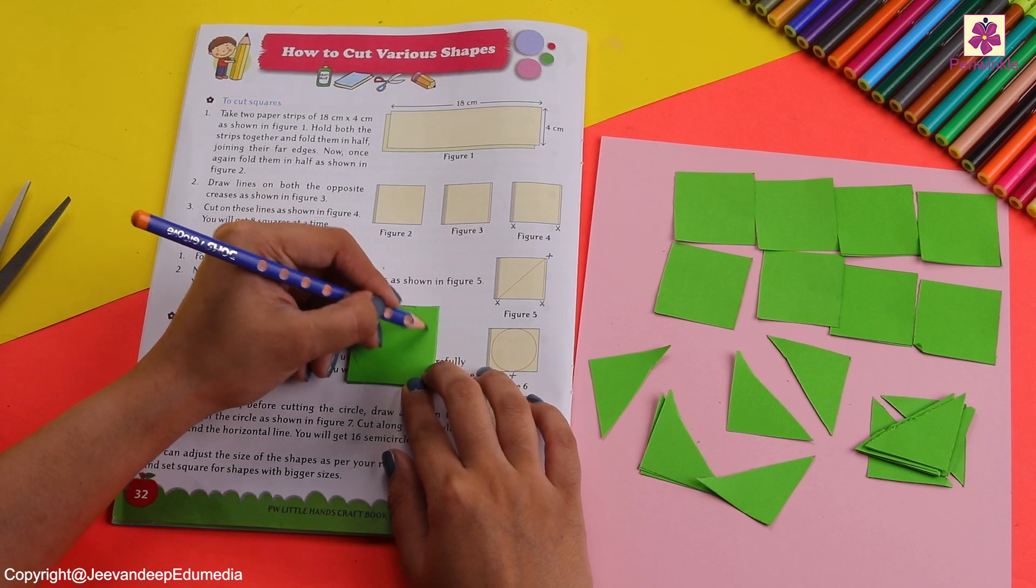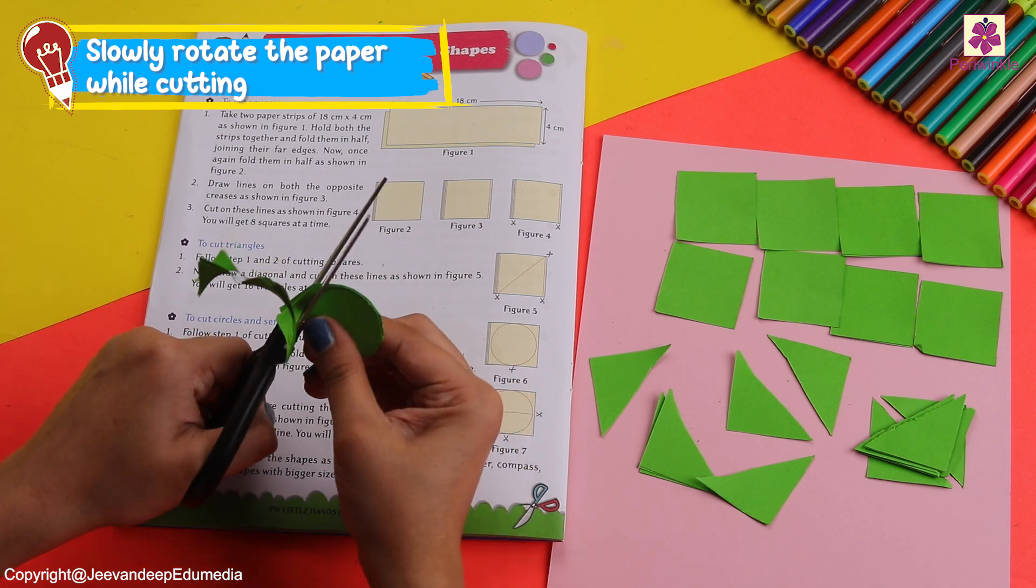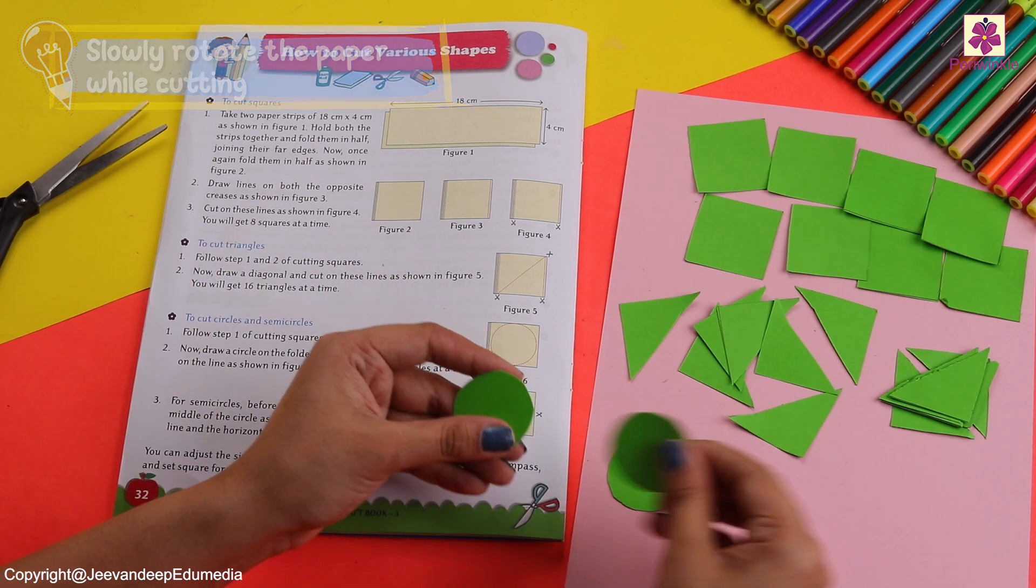After that, start by making a very big circle. Let's cut it together and look at that, our circles are ready.